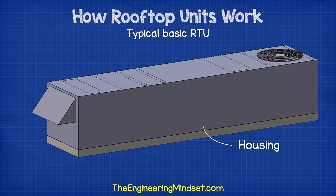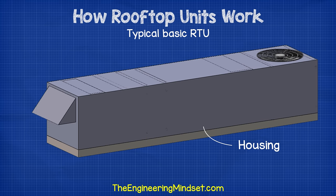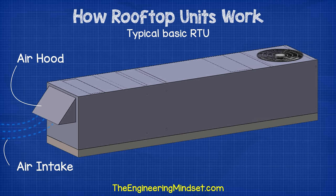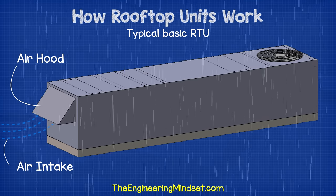First we have the housing, which protects all the mechanical and electrical equipment inside from sun, wind, rain, snow, frost, etc. There will be access panels to allow engineers to perform maintenance. At one end there will typically be an air hood, where the outside ambient air is drawn into the machine. The hood is shaped to stop water, snow, and debris from entering. There will usually be a mesh across the inlet to prevent wildlife and objects from entering, which would cause blockages and damage the fan.